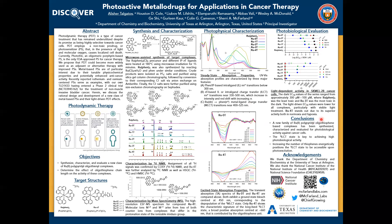To conclude and sum up all said above: a new family of ruthenium(II) polypyridyl oligothienyl complexes were synthesized, characterized, and evaluated for photobiological activity against cancer cells. Previous studies showed that the triplet ILCT state is the key to achieving higher photobiological activity, and increasing the number of thiophenes will allow us to obtain lower energies for light photo-excitation.